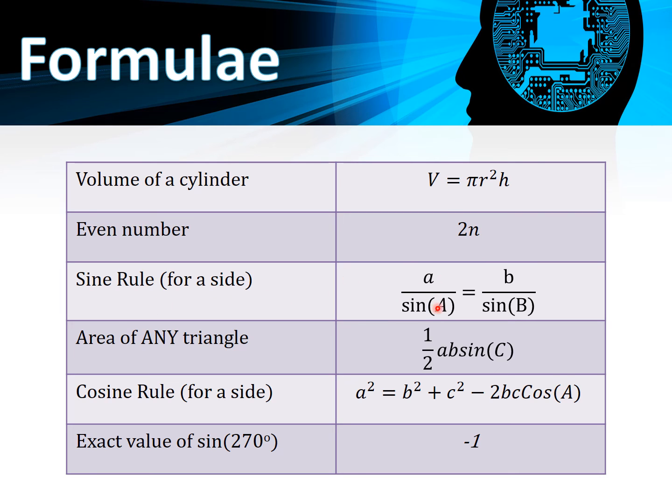Area of any triangle, this is some new learning that we've done recently: ½ab sin C. Cosine rule for a side: a² = b² + c² - 2bc cos A. And the exact value of sin 270° is -1, and we can get that from our graph.